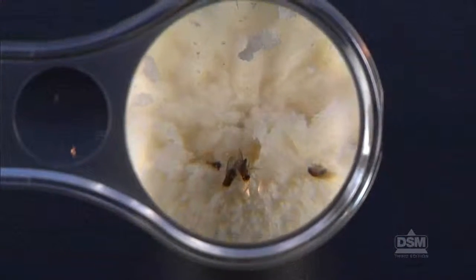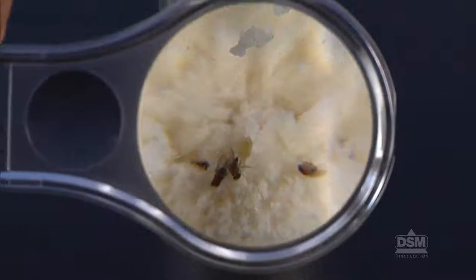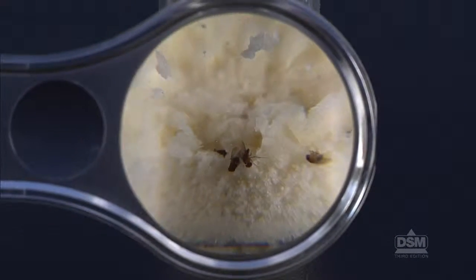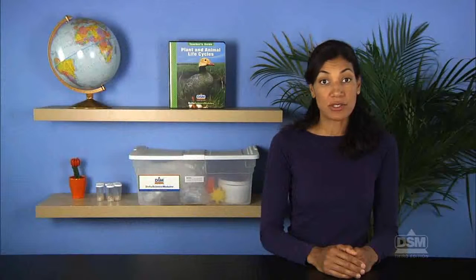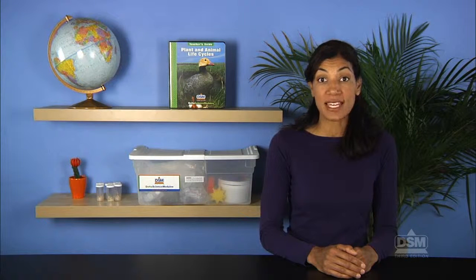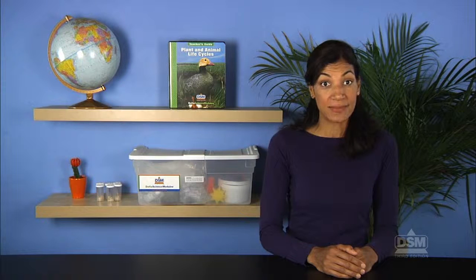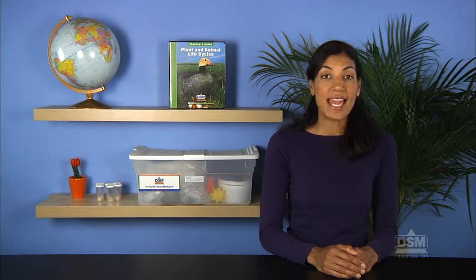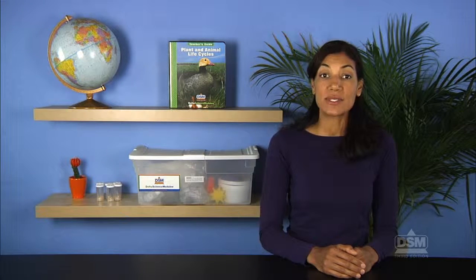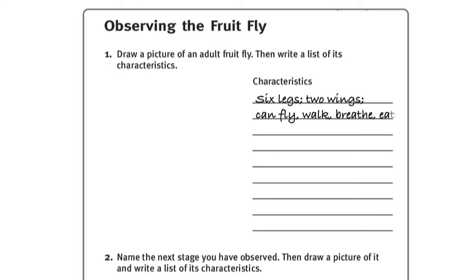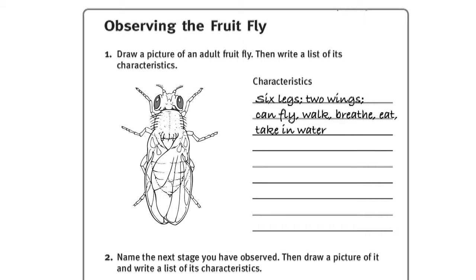Students may note that a few of the adult fruit flies have died. Use this observation to reinforce that it is natural for living things to complete their life cycles and die. Then tell teams to complete Question 1 and draw a picture listing the characteristics of their fruit flies.